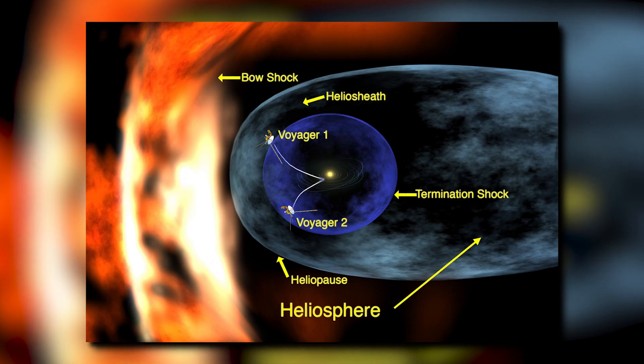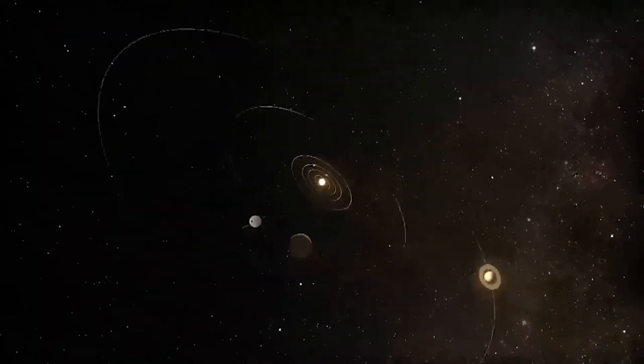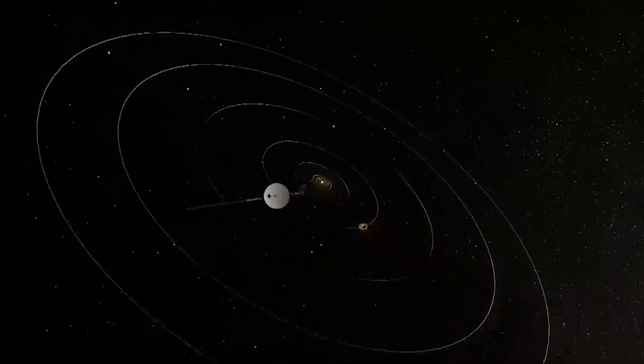The heliosphere, a sort of shield that encircles our solar system, has also been discussed. So let's dive into the details and find out what Voyager 1 has discovered.